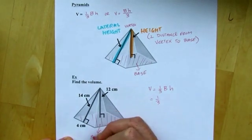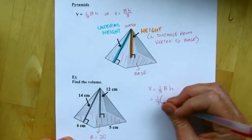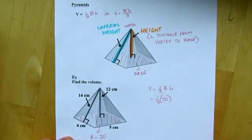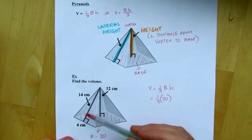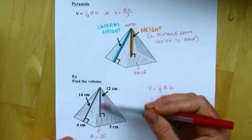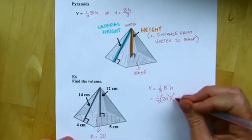So, this area is going to be 20, right? 20 square centimeters. That's the area of the base, and then the height, you just got to make sure you don't use the 14 because that's the lateral height. I want the 12.